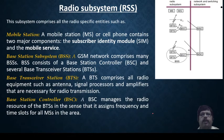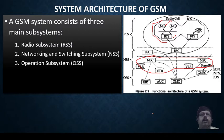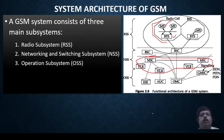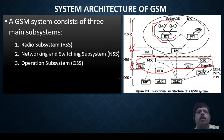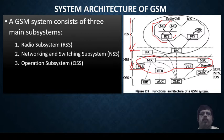The three main subsystems are: Radio Subsystem, Network Switching Subsystem, and Operation Subsystem. In the diagram, RSS covers the first section, followed by NSS — the Network Switching Subsystem — and then OSS, the Operations Subsystem. We will discuss what MS, BTS, and all the other components are, and their features, one by one.